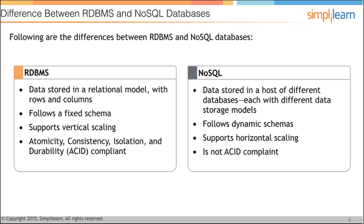RDBMS supports vertical scaling — increasing the capacity of a single machine. NoSQL supports horizontal scaling. I've also talked about how horizontal scaling takes place in MongoDB, Hadoop, and other NoSQL stores.